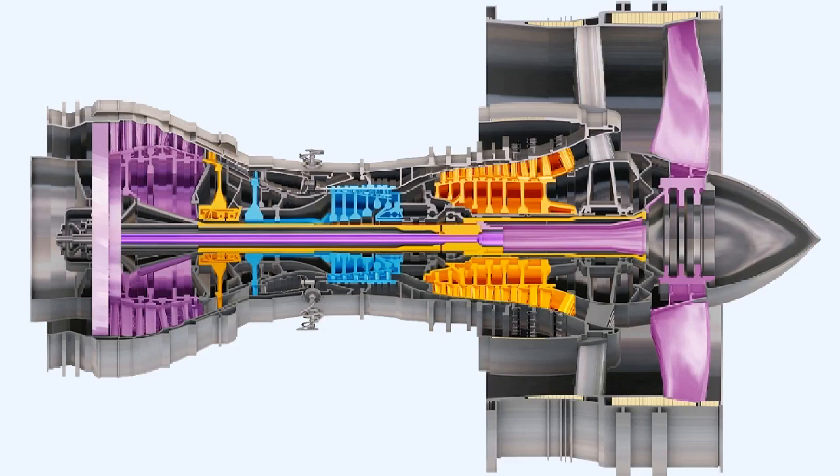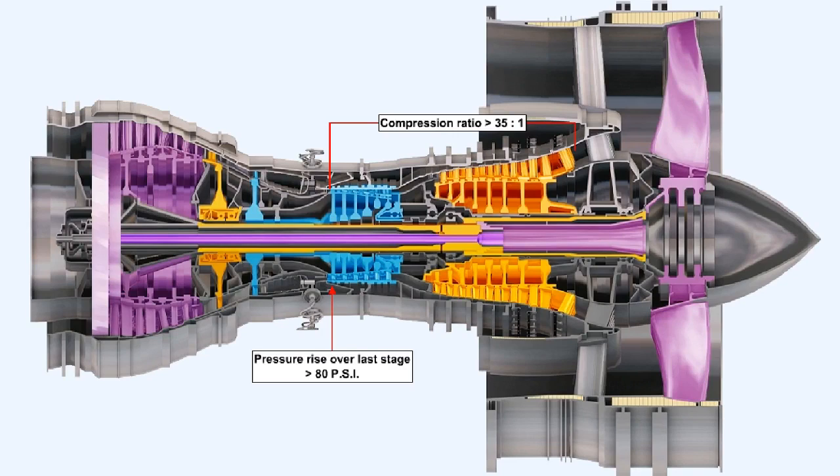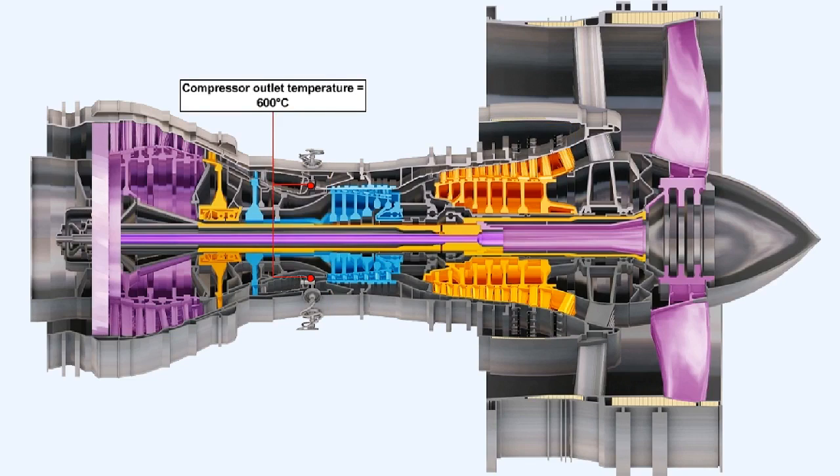In larger, more modern engines, compressors may consist of up to three spools. So effective is this method of compression that in an engine like the Rolls-Royce Trent, compression ratios in excess of 35 to 1 can be attained. In this engine, the pressure rise over the last stage may be greater than 80 pounds per square inch. The high pressures generated can result in compressor outlet temperatures of up to 600 degrees Celsius.